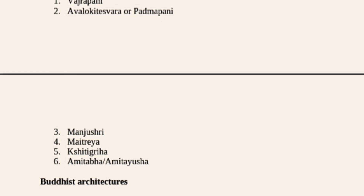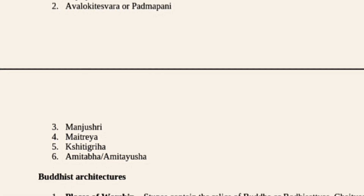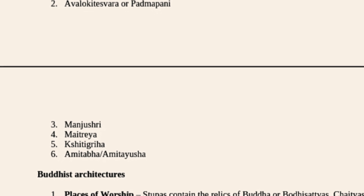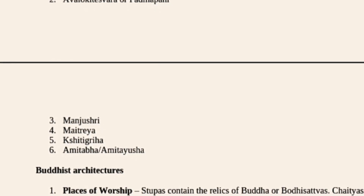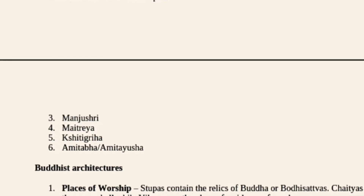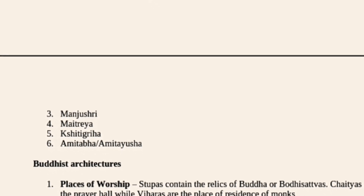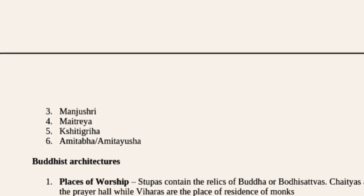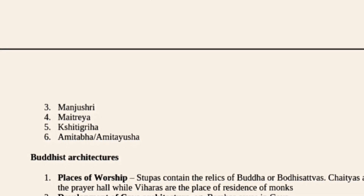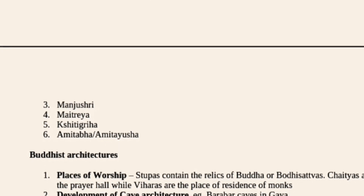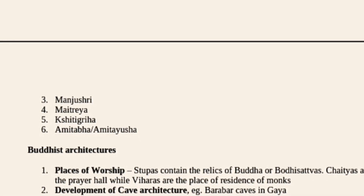Buddhist architecture includes stupas, which contain the relics of Buddha and Bodhisattvas. Chaityas are prayer halls, while Viharas are the places of residence of monks.